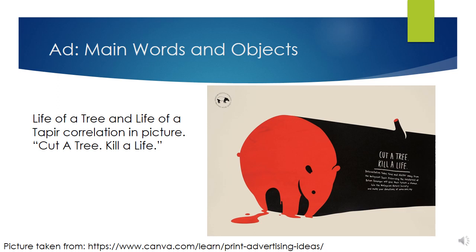The main object of this ad graphically shows the correlation that the main words present. The tapir is drawn in red and looks like it is bleeding, symbolizing that the tapir is dying. So the graphic shows that a chopped down tree kills a tapir. Even the little branch is red inside, which probably means that the entire tree is supporting the tapir, and having it cut down makes the tapir die. The audience will correlate a direct relationship between a tree getting cut down and the tapir dying through the graphics used.